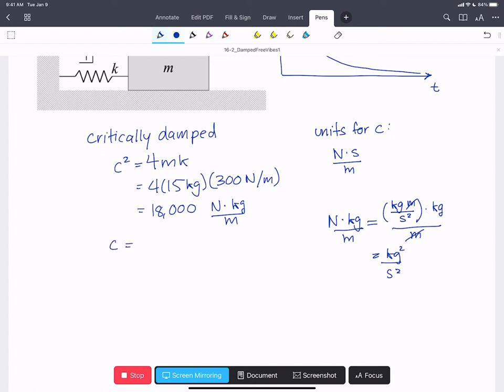And so when we take the square root of this, we get 134.2 kilograms per second.